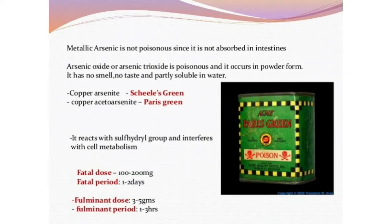Now for arsenic poisoning: metallic arsenic is not poisonous because it is not absorbed in the intestine. However, arsenic oxide — arsenic trioxide — is poisonous and occurs in powder form. It has no smell, no taste, and is partly soluble in water. One form is Scheele's green, which is copper arsenite.